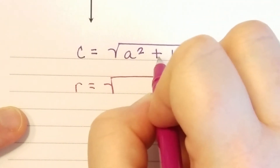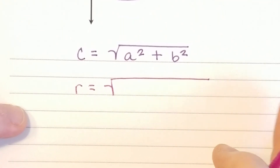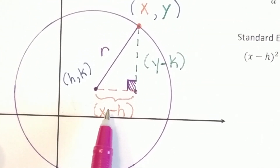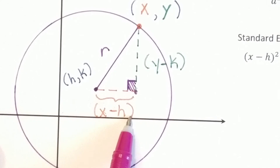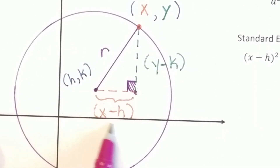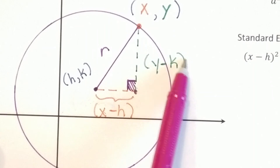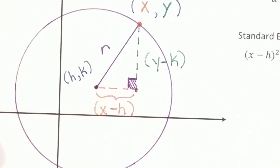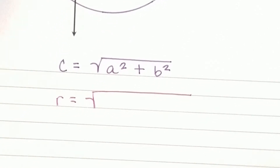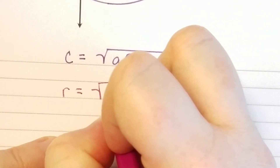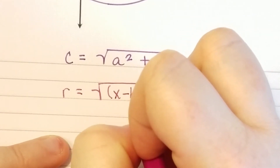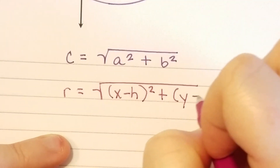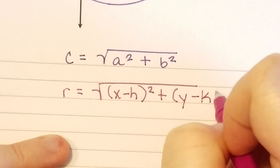a squared plus b squared is going to have to be this quantity squared plus this quantity squared. Normally I'd call this a and I'd call this b, but I'm going to call it x minus h and y minus k and plug it into my equation. So this would be x minus h quantity squared plus y minus k quantity squared.